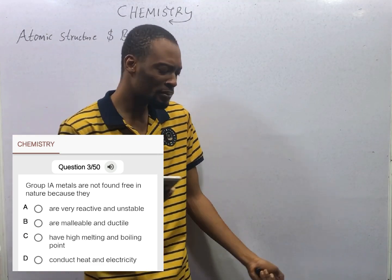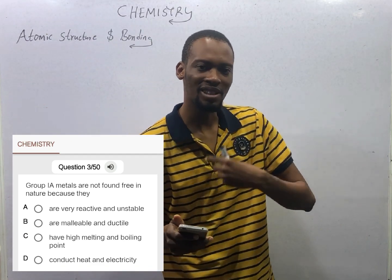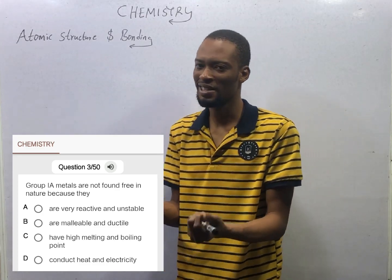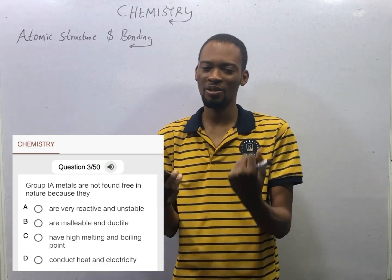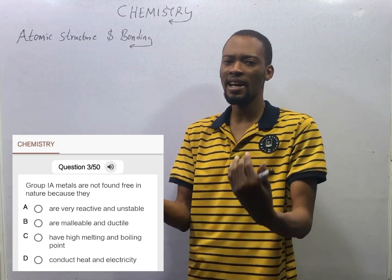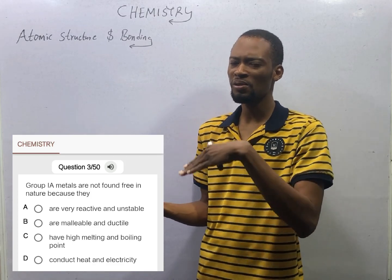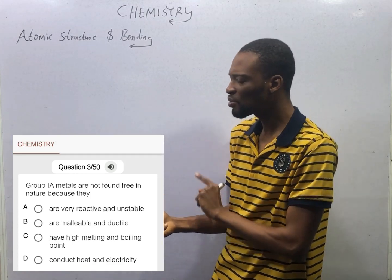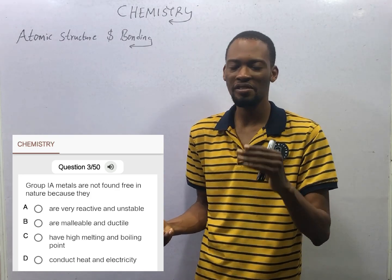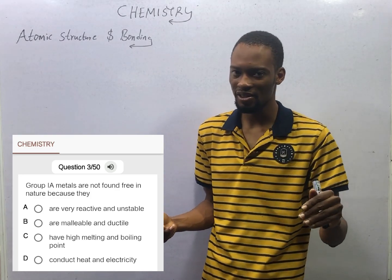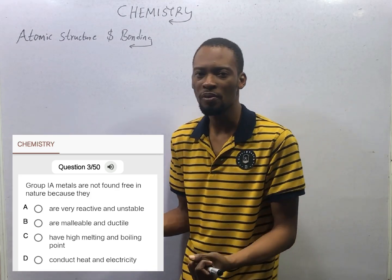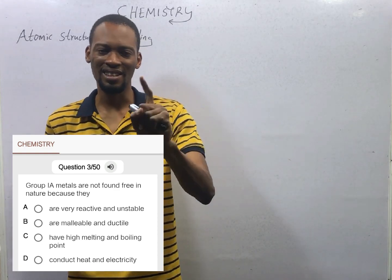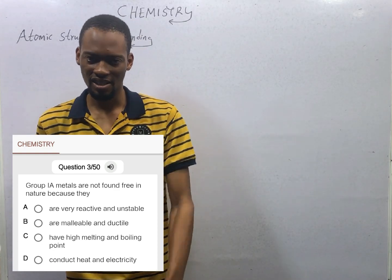Metals are elements that ionize by electron loss. Non-metals ionize by electron gain, which means they get electrons to become negative ions. While metals lose electrons to become positive ions. Ions are atoms or group of atoms that possess an electric charge.